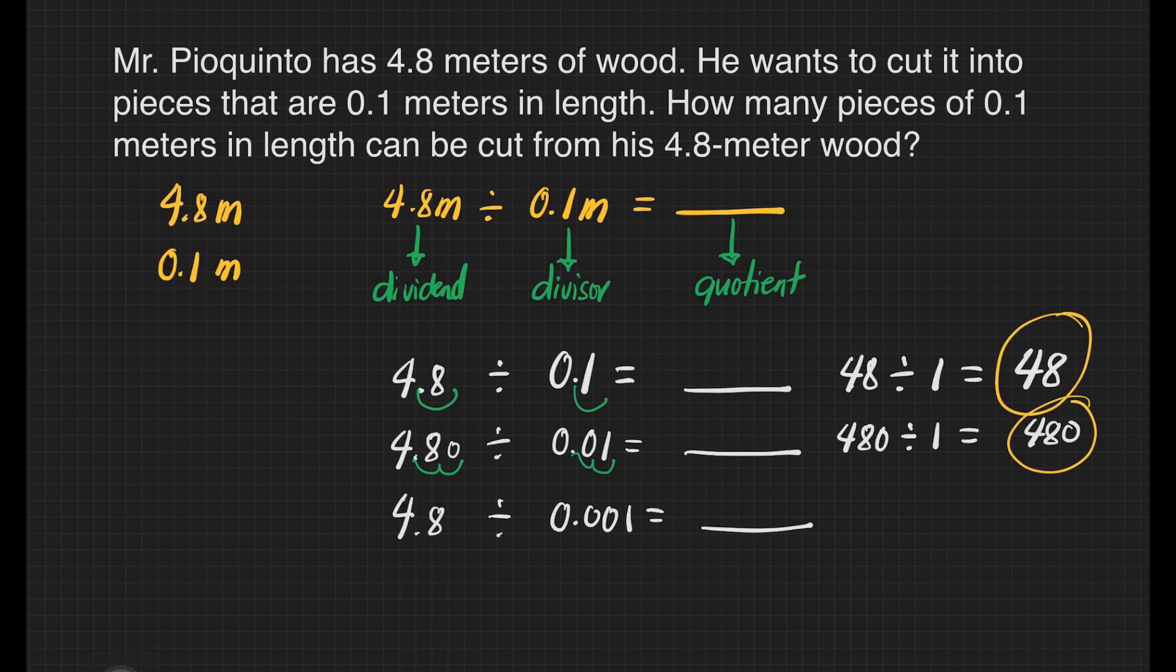What if we will divide four and eight-tenths by one-thousandth? How many decimal places do we need to move to make our divisor a whole number? That's one, two, and three.